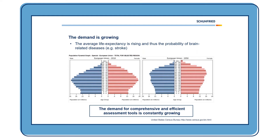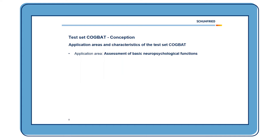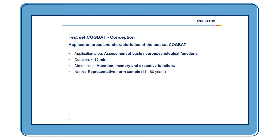This is why we developed test sets like the test set Cockpit to fulfill this demand. The test set Cockpit is designed to assess basic neuropsychological functions. The duration is around 50 minutes. The dimensions measured are attention, memory, and executive functions. We have a representative norm sample ranging from 11 to 80 years.